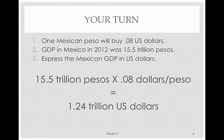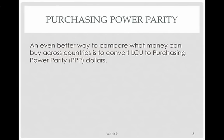Before the conversion, when the value is in pesos, we have no idea what that would be in US dollars — that's the exchange rate method. Purchasing power parity is a different way to do the conversion, and it's better. With purchasing power parity, you compare what money can actually buy across countries, rather than just how many US dollars the money can buy.